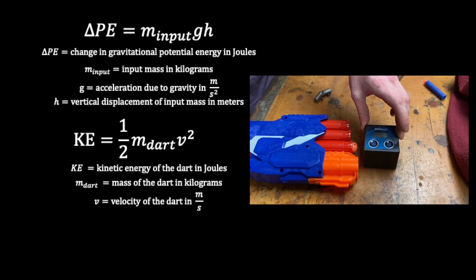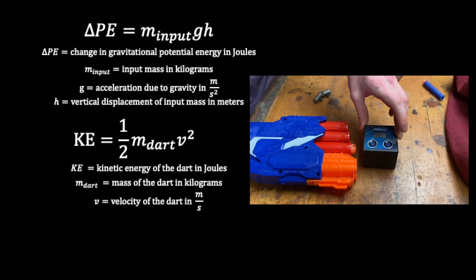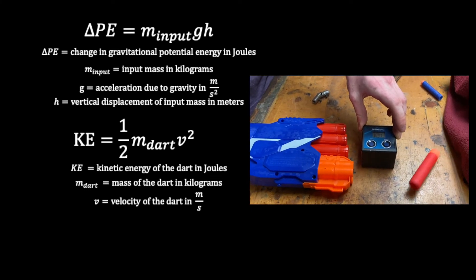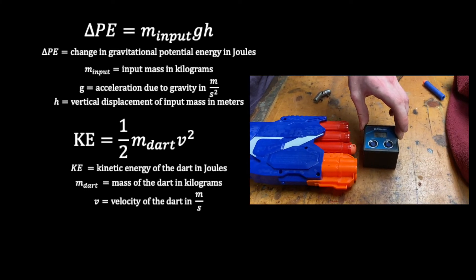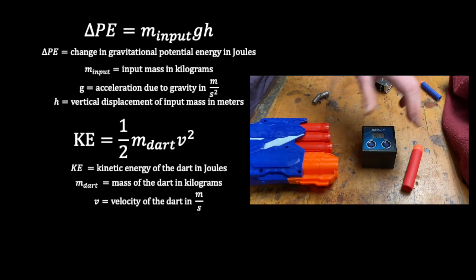The exit energy for each firing mode was determined by measuring the exit velocity of the dart using an Anson Scientific Photogate Timer and the mass of the dart being fired in order to calculate the final kinetic energy using the kinetic energy equation.